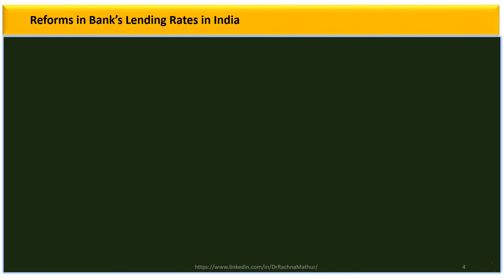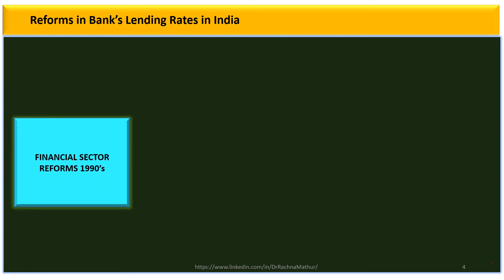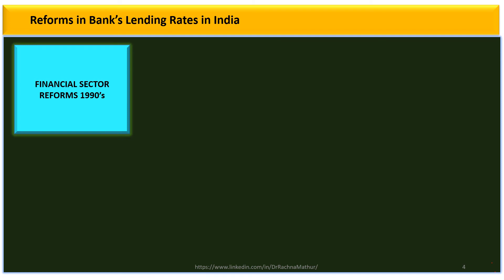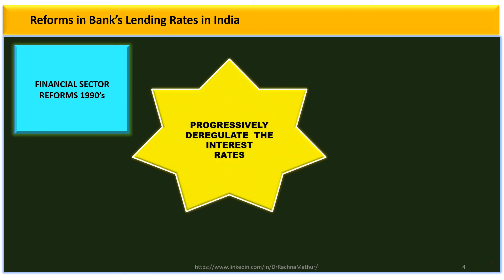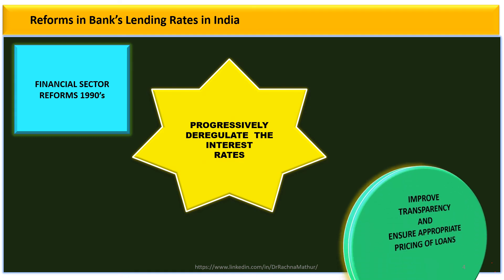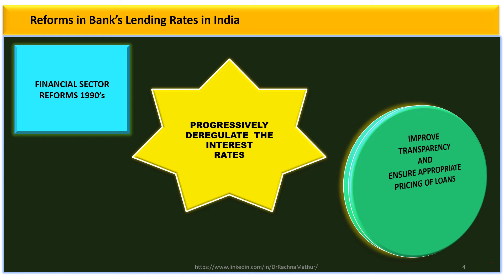India introduced its new economic policy in the 1990s — the policy of liberalization, privatization, and globalization. In the early 1990s, India also introduced financial sector reforms. As part of these reforms, there was a need to progressively deregulate interest rates to improve transparency and ensure appropriate pricing of loans. Therefore, RBI aimed to strengthen monetary transmission by focusing on the design of lending rates of banks in India.